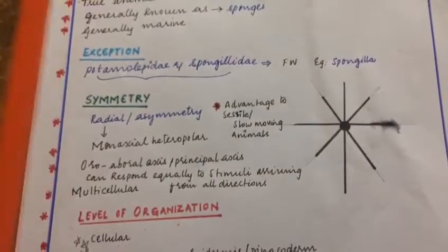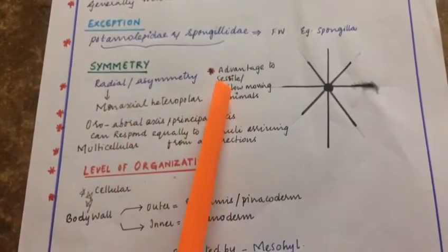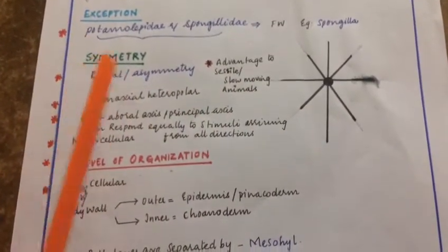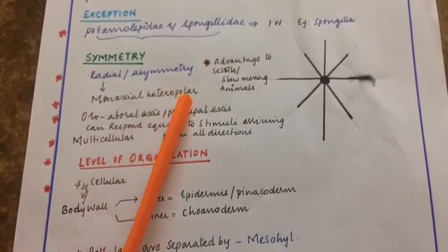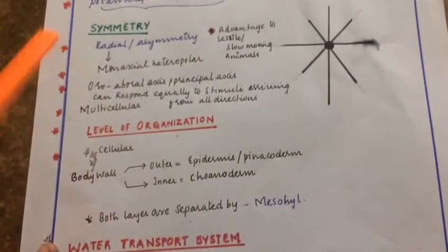They show radial symmetry or asymmetry. Radial symmetry is also known as mono-axial heteropolar symmetry, in which we can see an oro-aboral axis.